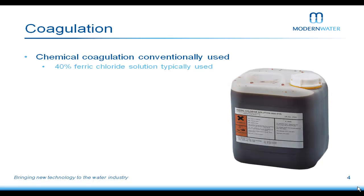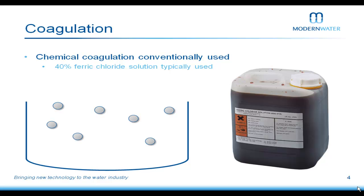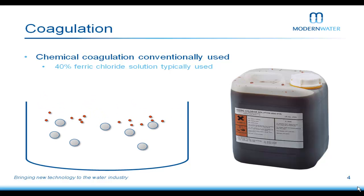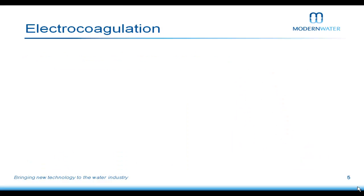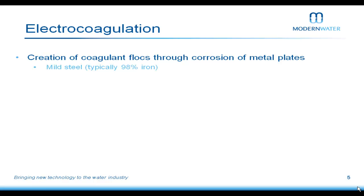Traditionally, chemical coagulation involves dosing water with ferric chloride, which normally comes in a 40% concentration mix. The premise is that if you have a water tank with colloids — contaminants in the water — the ferric chloride coalesces with the contaminant and everything drops down, forming a thick sludge at the bottom. You then siphon off the clean water. That's how chemical coagulation works.